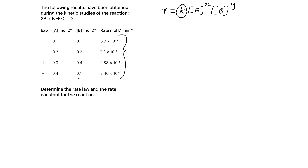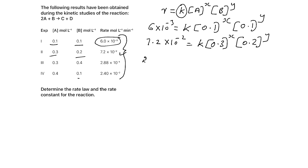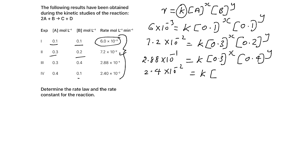We can write the rate law for all four experiments. For the first experiment: 6 × 10⁻³ = K × [A]⁰·¹ˣ × [B]⁰·¹ʸ. Second experiment: 7.2 × 10⁻² = K × [0.3]ˣ × [0.2]ʸ. Third experiment: 2.88 × 10⁻¹ = K × [0.3]ˣ × [0.4]ʸ. Fourth experiment: 2.4 × 10⁻² = K × [0.4]ˣ × [0.1]ʸ.